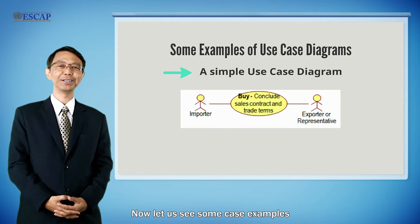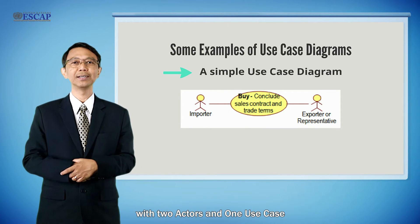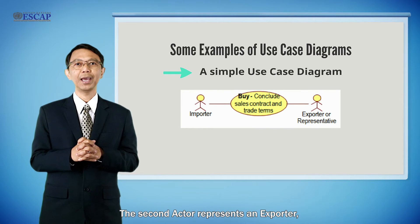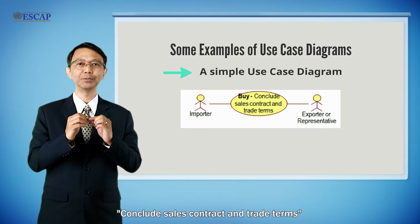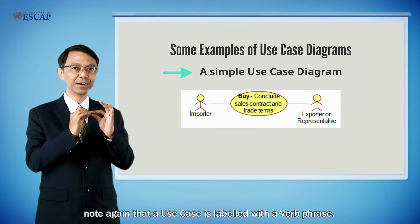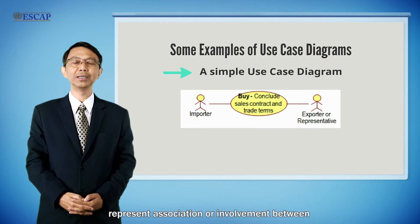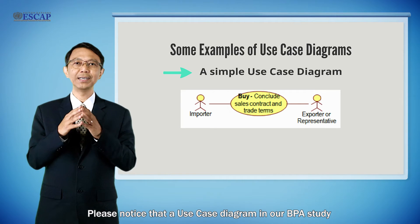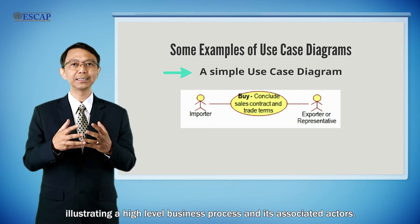Now let us see some case examples. This figure shows a simple use case diagram with two actors and one use case. The first actor represents an importer, the second represents an exporter, and the one use case is called 'Conclude Sales Contract and Trade Terms,' or 'Buy' for short. Note that a use case is labeled with a verb phrase. The lines represent association or involvement between these two actors and this use case. A use case diagram in our BPA study is normally used to communicate a high-level frame of reference illustrating a high-level business process and its associated actors.